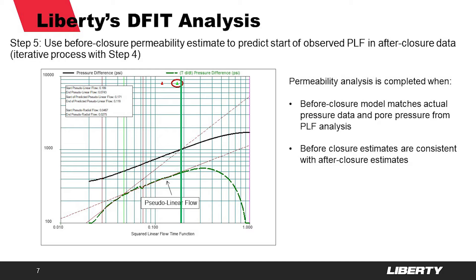The DFID analysis is complete when three conditions are met: the before-closure model matches the actual pressure data up to closure; we predict the right reservoir pressure observed from the pseudo-linear flow analysis; and all before-closure estimates in terms of permeability and half-length predict the correct observed pseudo-linear flow, consistent with the after-closure estimates.